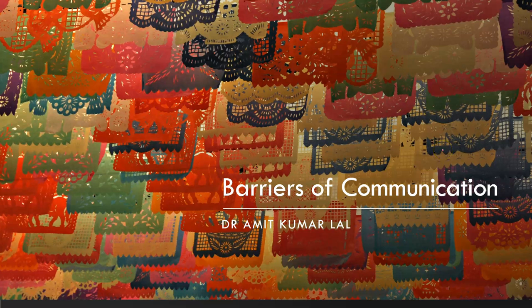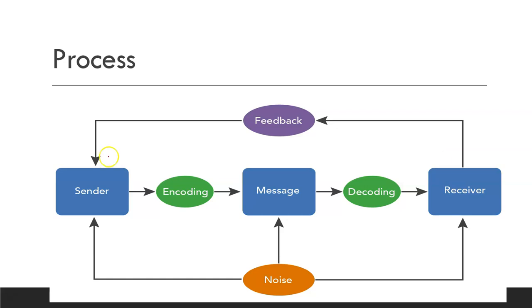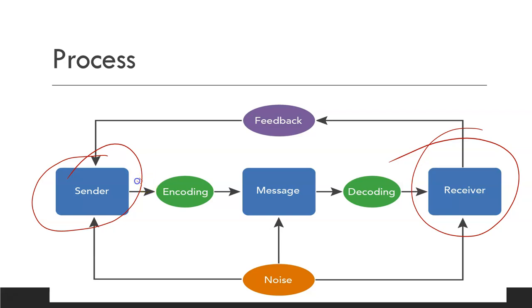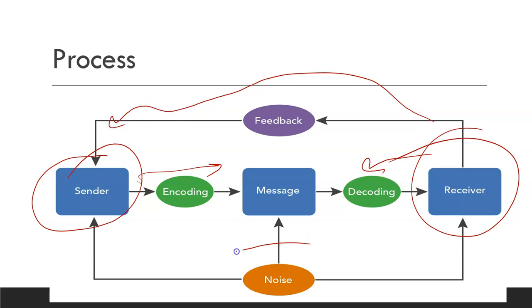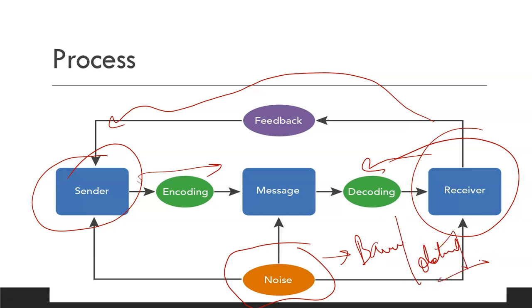We have already explained the communication process in detail. Let's revise it again so that we can understand what exactly is a barrier of communication. In the communication process, on one side you have a sender, on the other side there is a receiver. The sender encodes the message and the receiver decodes it and then provides feedback to the sender. But in this whole process, noise plays a very important role because it acts as a barrier or obstruction. So what can these barriers be? We will talk about that in this particular session.